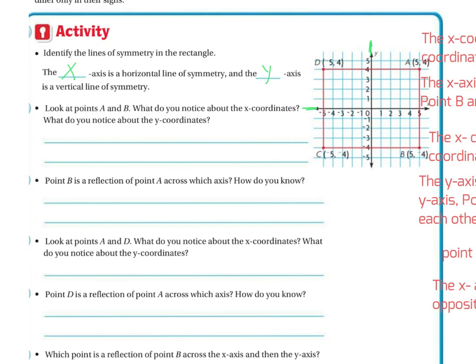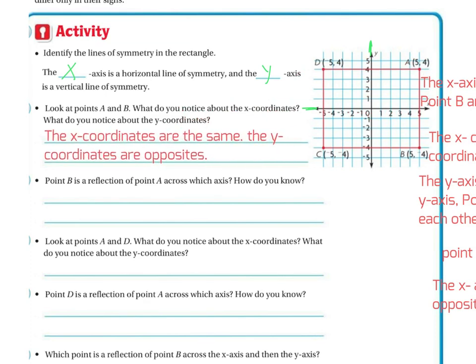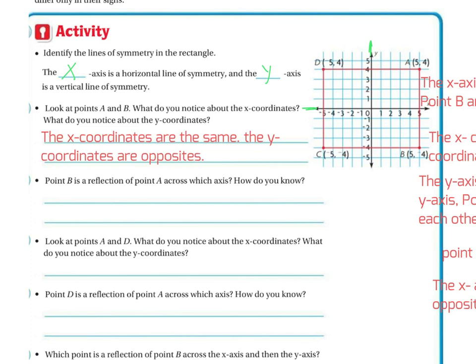Look at the two points, points A and B. What do you notice about the x-coordinates and what do you notice about the y-coordinates? Here's my A and here's my B. So 5, 5, 4, 4. They have the same numbers, they're just different signs. The x-coordinates are the same, but the y-coordinates are the opposite.